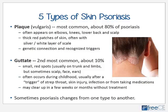The second most common type, occurring in about 10 percent of patients, is called guttate psoriasis. It is characterized by small red spots usually on the trunk and limbs, but also around the head and ears. It often occurs during childhood, usually triggered by a strep throat infection, some sort of skin injury, or taking new medications.